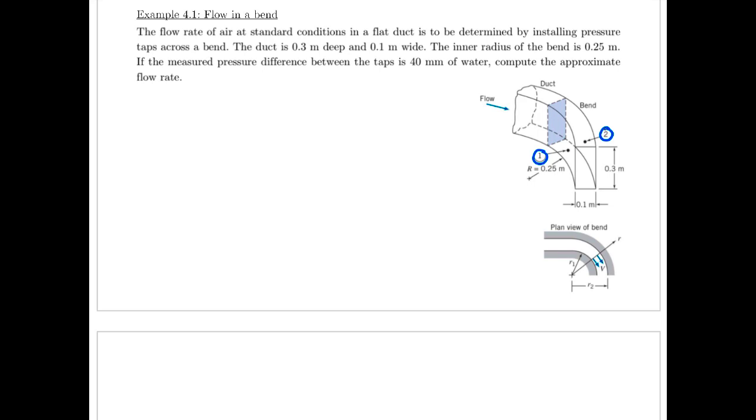So it gives us a fairly simple way of measuring the flow. The duct is 0.3 meters deep and 0.1 meters wide. Inner radius of the bend is given 0.25 meters. And if the pressure difference between the taps is 40 millimeters of water, compute the approximate flow rate.